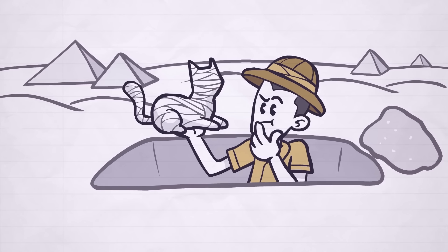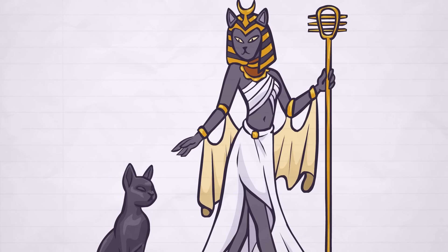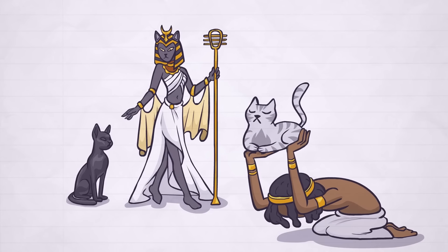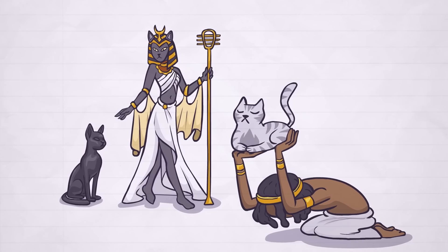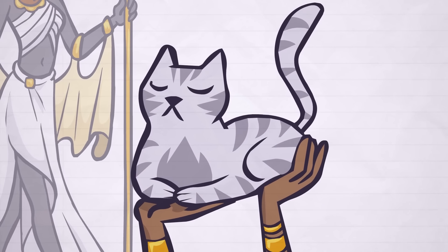revealing the significance of these furry companions in their culture. The Egyptian goddess Bastet, often depicted with the head of a lioness or domestic cat, was the goddess of home, fertility and protection. And cats were considered sacred animals associated with her. So it makes sense why they would devote so much time and attention to their beloved companions.